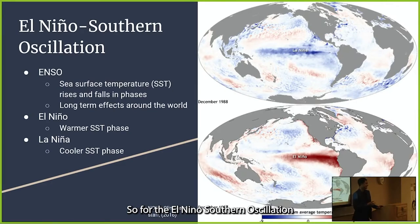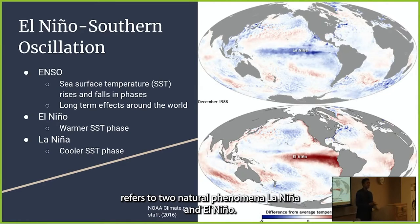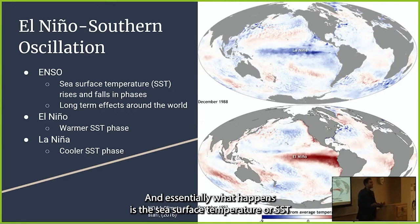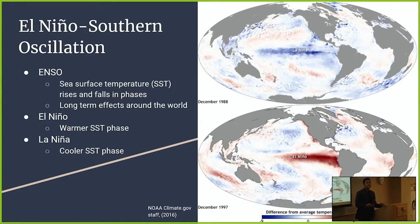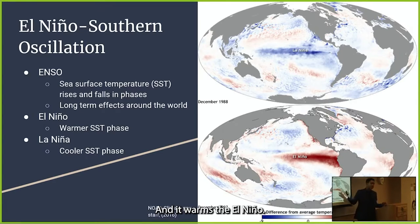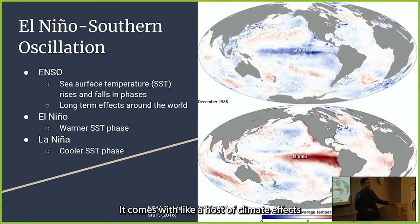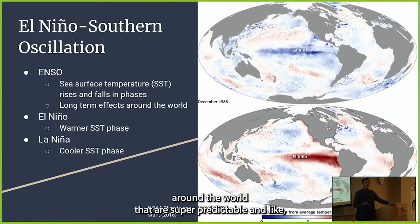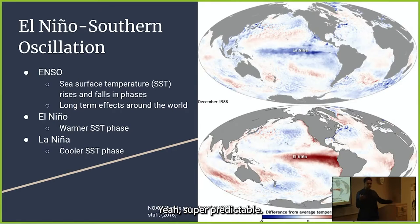ENSO, or the El Niño Southern Oscillation, refers to two natural phenomena: La Niña and El Niño. Essentially, the sea surface temperature (SST) cools during La Niña in the tropical Pacific and warms during El Niño. This matters because it comes with a host of climate effects around the world that are super predictable.